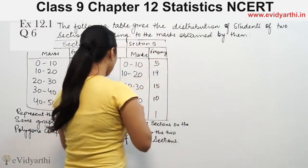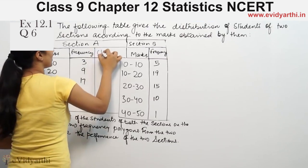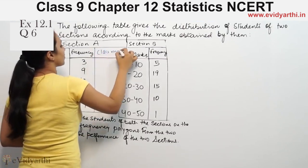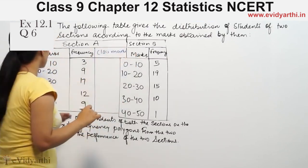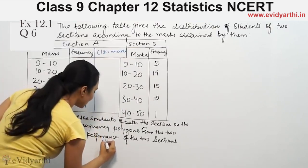First of all, we will make the class marks. How do we make class marks? The formula is lower limit plus upper limit divided by 2.